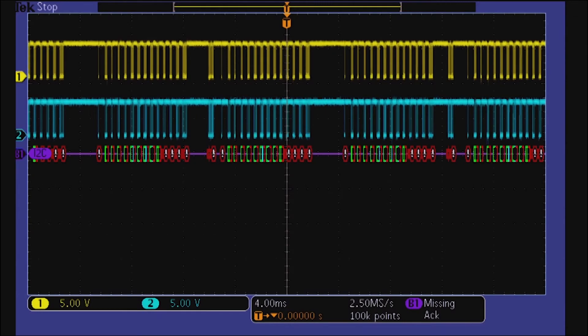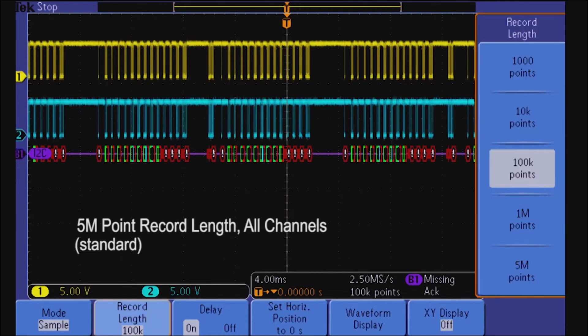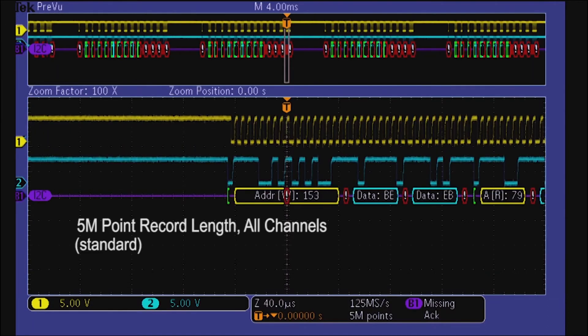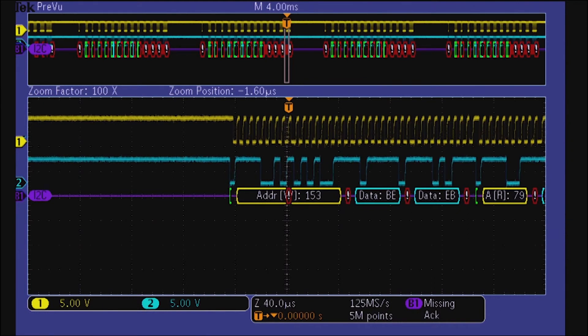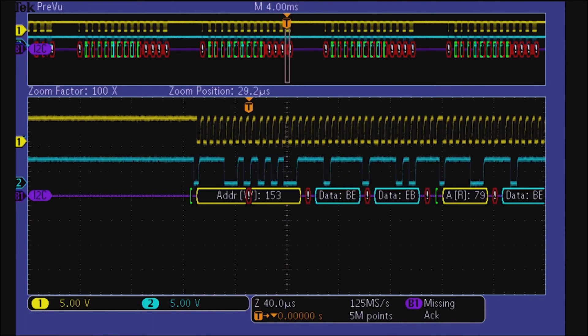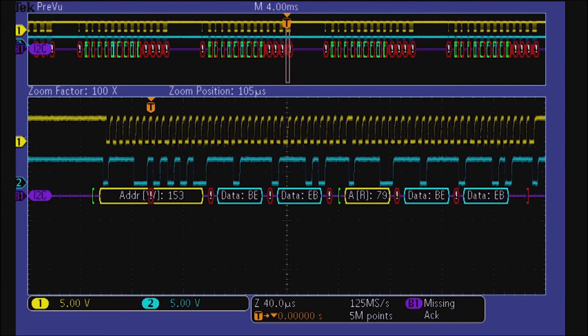With 5 million points of record length per channel, the MSODPO 3000 can capture hundreds of messages. Wave Inspector lets you pan and zoom through the entire acquisition quickly and easily.